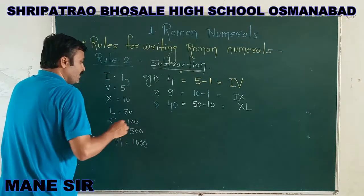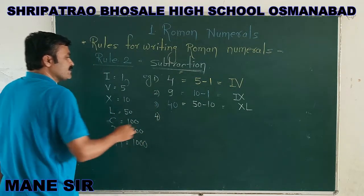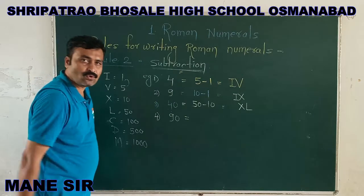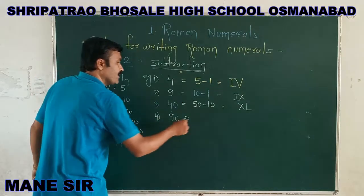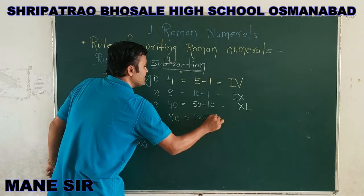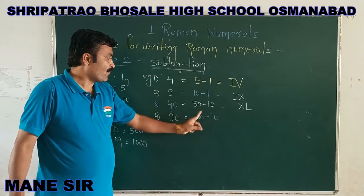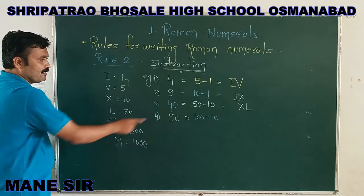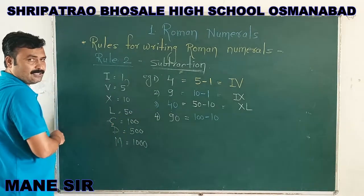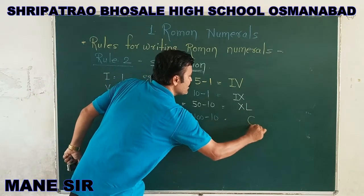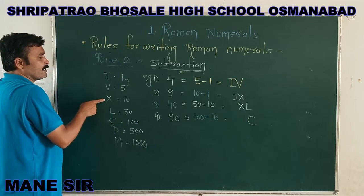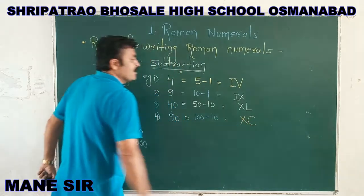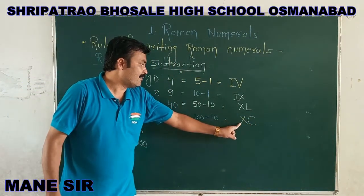The next example, number 4, is international number 90. We want to convert 90 into Roman numerals. The method is: 100 minus 10. If we subtract 10 from 100, we get 90. Thinking about the 7 basic signs, 100 has Roman sign C, so we write C first, and for 10 we have X. To represent the subtraction process, we write X before C. So XC — in this way we write number 90.